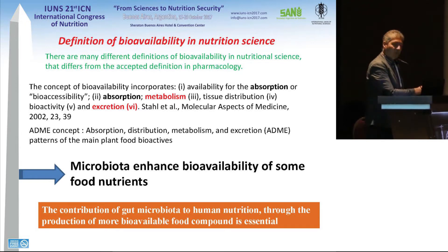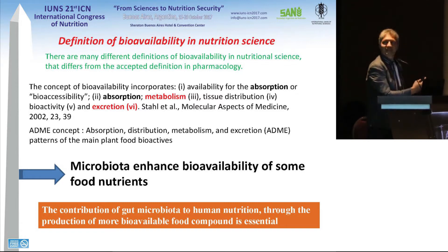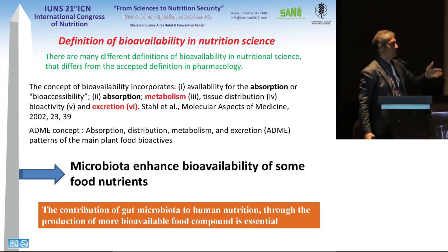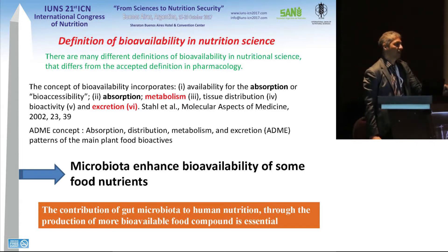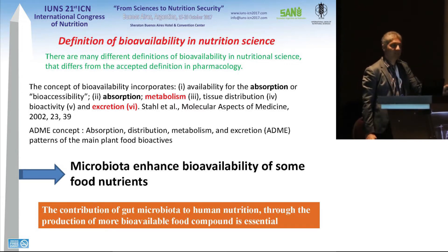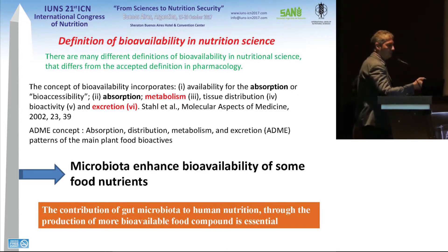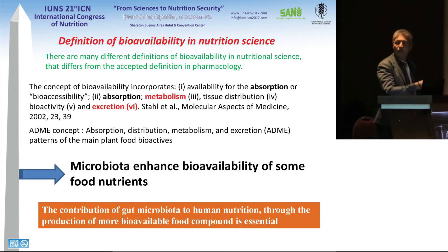From this definition of bio-availability, we can say that the microbiota is very important for the bio-availability of some compounds that, as we have seen, are not able to cross the stomach barrier. They go to the intestine, are metabolized, and then the metabolites can be bio-available. So microbiota is very important for this, and the contribution of gut microbiota to human nutrition through the production of these more bio-available compounds is essential.